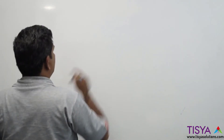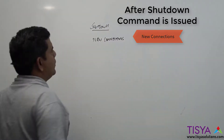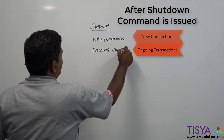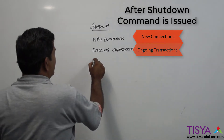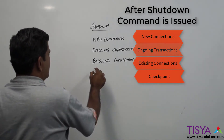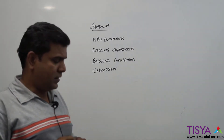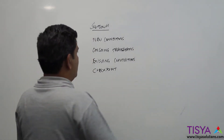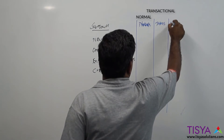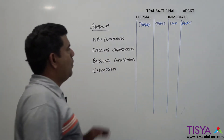When a shutdown command is issued, there are four important aspects to consider: what about new sessions that want to establish, what about ongoing transactions, what about existing connections or sessions, and what about a checkpoint. These four aspects differ depending on whether you issue shutdown normal, transactional, immediate, or abort.